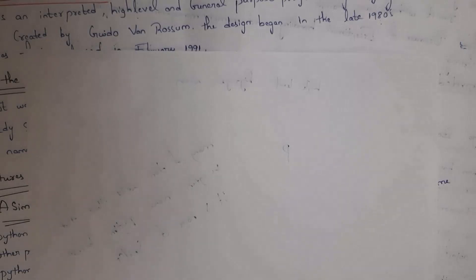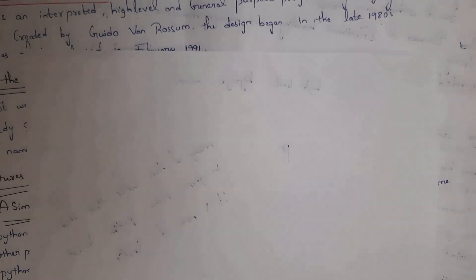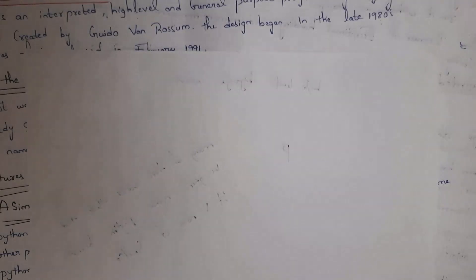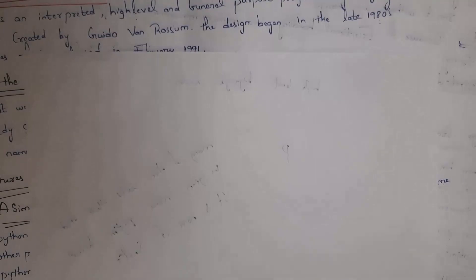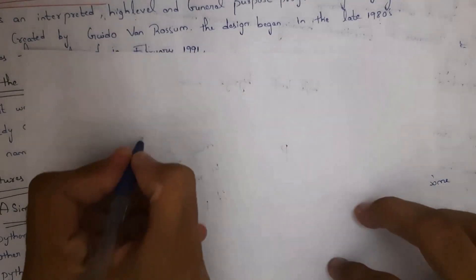Now I will explain the first Python program. To generate the output 'Hello', consider how it's done in C: in C you need to write header files, then a main function, and inside the main function write printf('Hello'). But in Python there is no need to write header files or a main function.